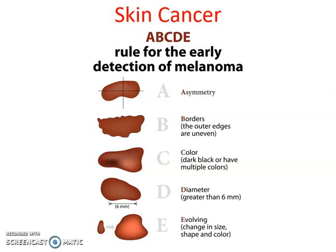If you have a mole or freckle that is asymmetric, that can sometimes indicate the start of melanoma, also known as skin cancer. We want the border to be well-defined and circular — not having ridges or bumps. We want the color to be uniform; multiple colors within the same freckle can be an indicator. For diameter, 6 millimeters is the threshold — think of it as about the size of a pencil eraser or smaller. Anything bigger than that is again an indicator.